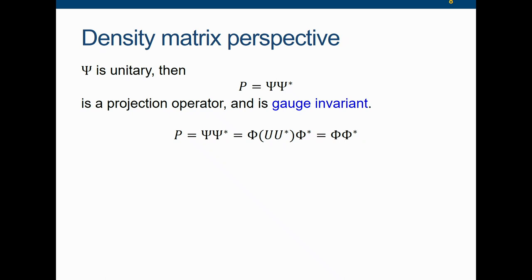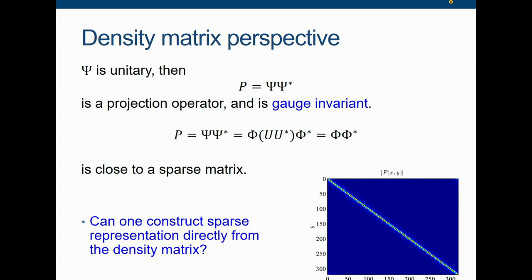What is SCDM? The basic idea is that Psi is a unitary matrix, and P equals Psi times Psi-star — this is the density matrix, a projection operator. It is gauge invariant in the sense that if you choose any U, UU-star exactly cancels and you have Phi times Phi-star. Remember, Phi is the localized orbital, which means that P is a sparse matrix, or at least close to a sparse matrix.